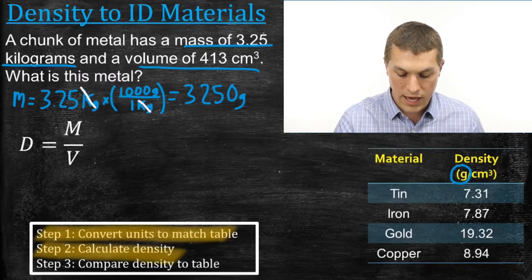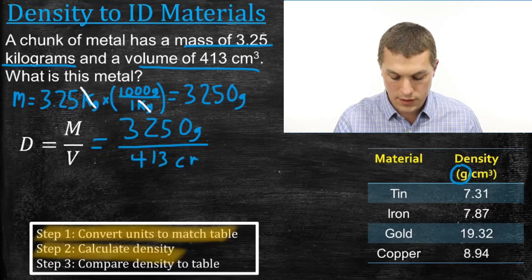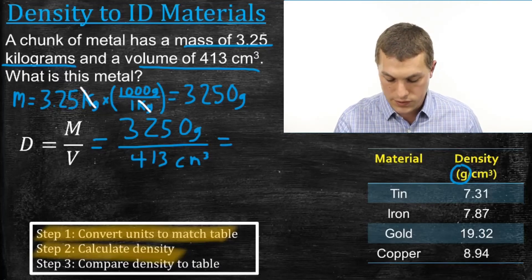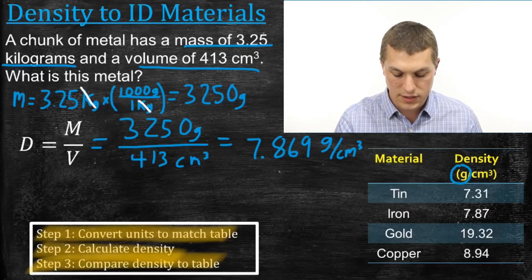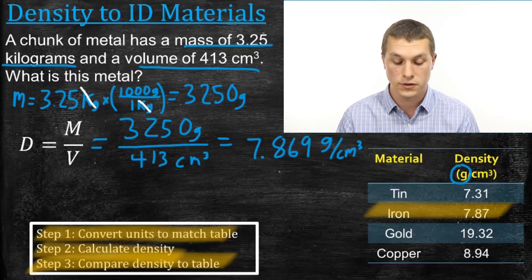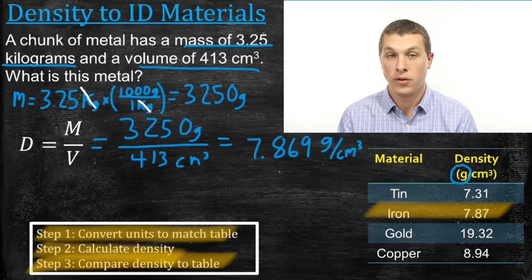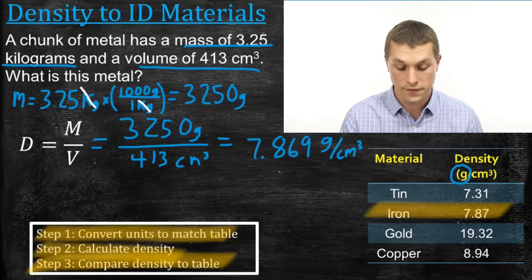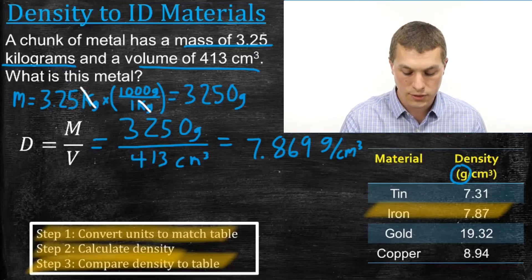Now we can go to step two: calculate the density. We plug in 3,250 grams divided by 413 cubic centimeters. Plugging that into our calculator, we get 7.869 grams per cubic centimeter. The last step is to compare that density to the table. Iron has a density of 7.87 grams per cubic centimeter — a pretty close match. So since our calculated density of 7.869 grams per cubic centimeter is a very close match to iron, we know our material is made out of iron.